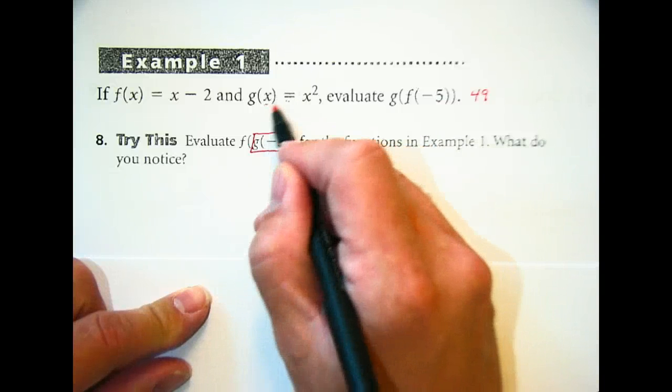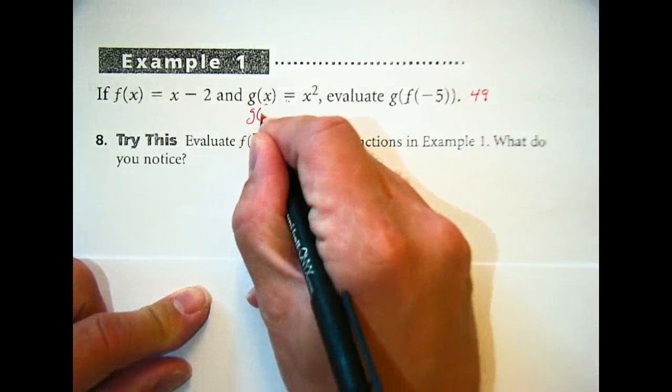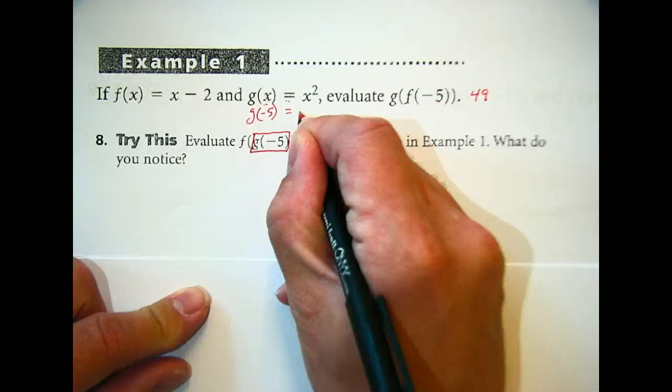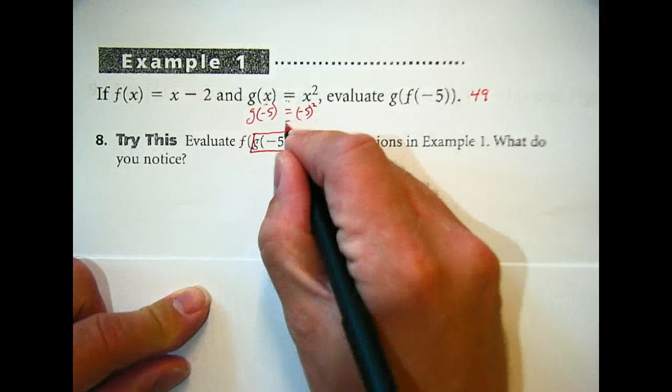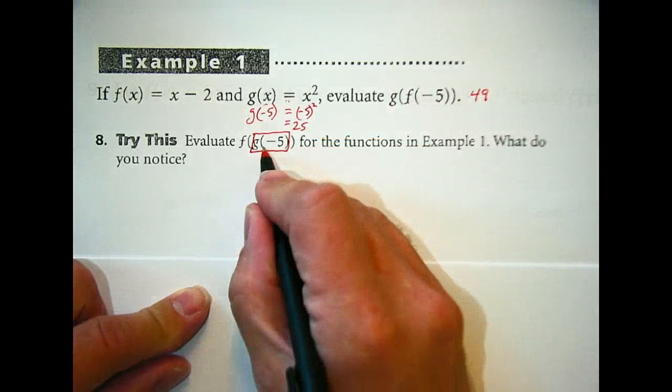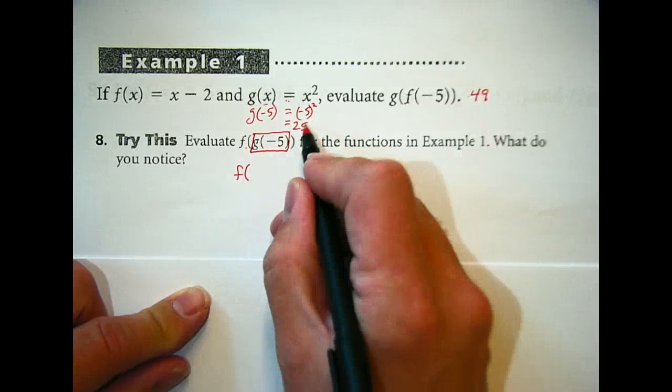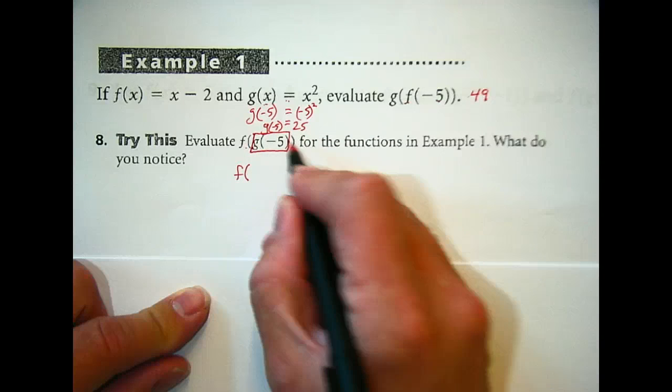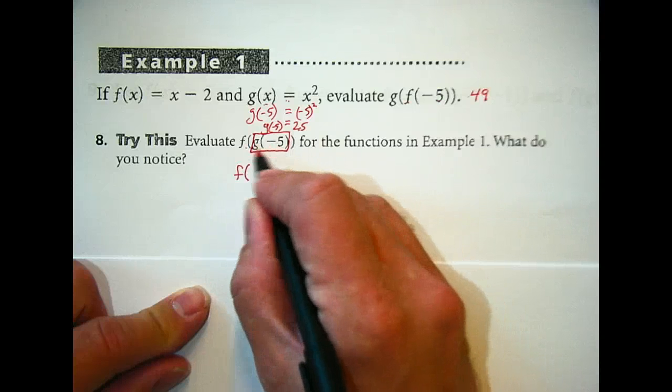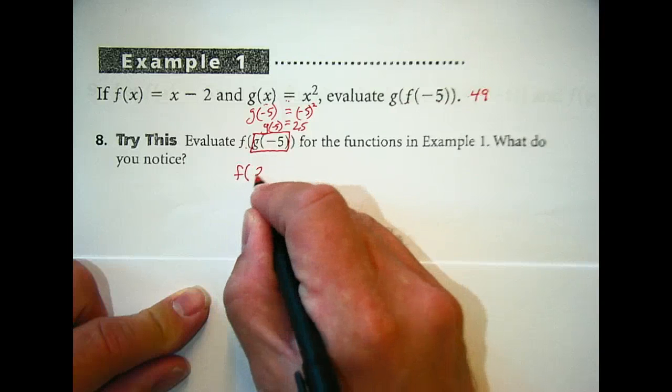We're going to substitute that in. So if I go g(-5), that gives me (-5)², which is 25. So now rather than having f(g(-5)), I have f of, since g(-5) equals 25, I can put that in right here. So now I have f(25).